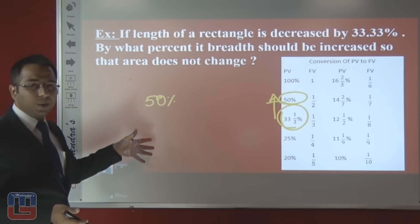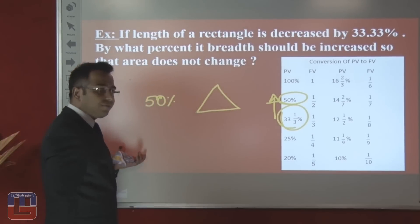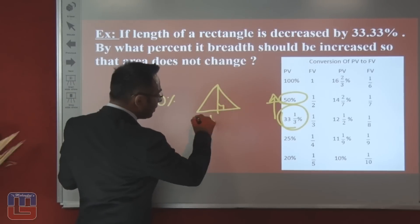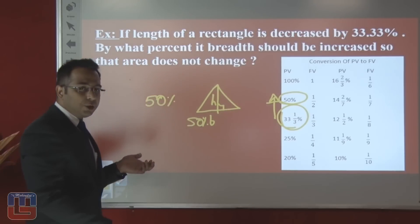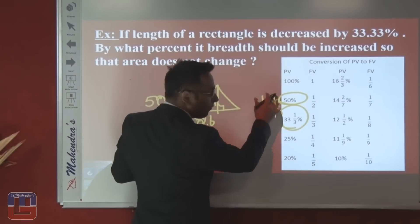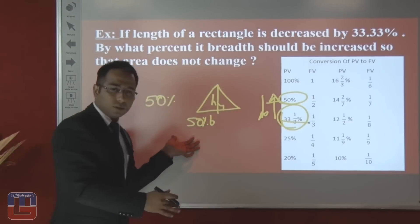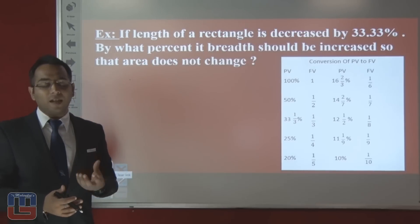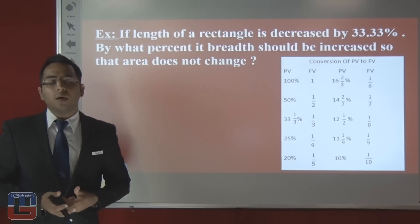Similarly, for a triangle where the area must remain unchanged: if the base is increased by 50%, the height must be decreased. Going down in the table from 50% (which is 1/2) gives 1/3, which equals 33 and 1/3%. So the height should be decreased by 33 and 1/3%. This concept applies whenever one variable increases and another must decrease to keep the final product constant.